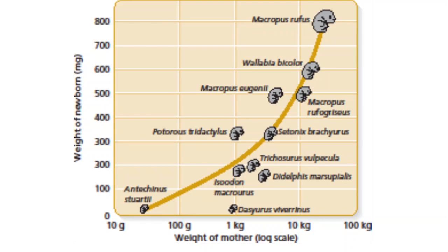When you look at the weight of the mother on a log scale, marsupials range from about 15 grams all the way up to about 90 kilos. Notice what happens to the size of their offspring — and these are weights in milligrams, not grams. Even a giant red kangaroo at around 80–90 kilograms is going to have an offspring that only weighs 800 milligrams. So the offspring of this great big animal are tiny — just the size of a little bean — and most of that development takes place in the pouch.